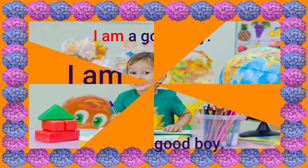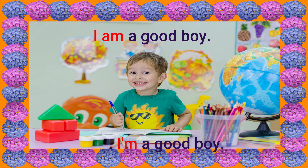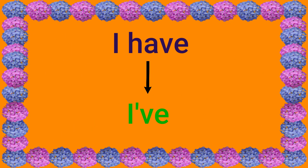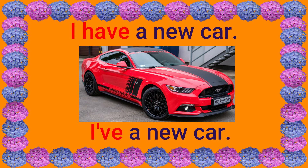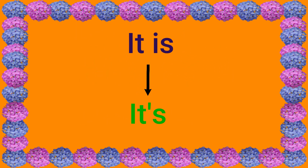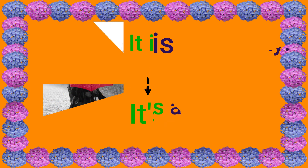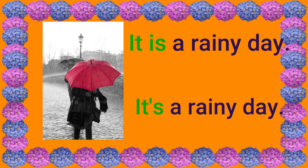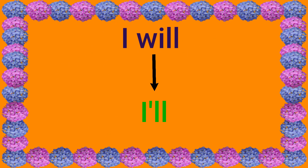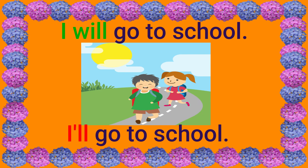I am a good boy — I'm a good boy. I have can be said as I've. I have a new car — I've a new car. It is can be said as it's. It is a rainy day. I will can be read as I'll. I will go to school — I'll go to school.